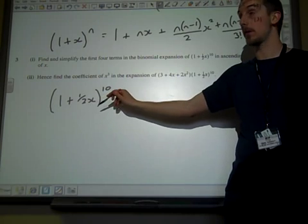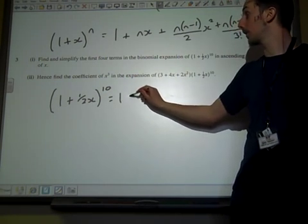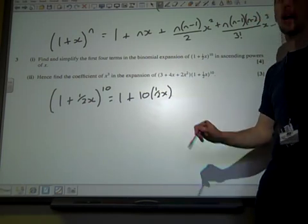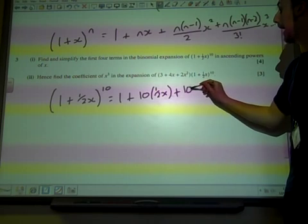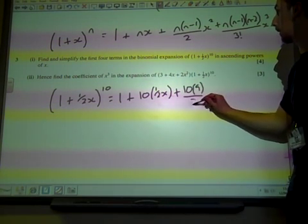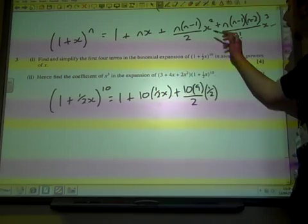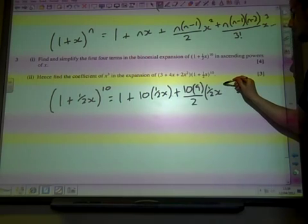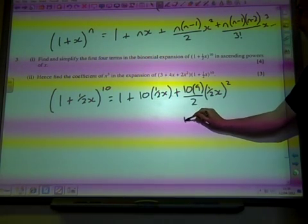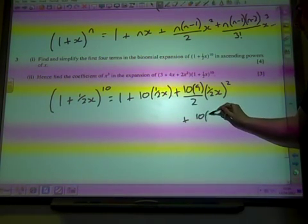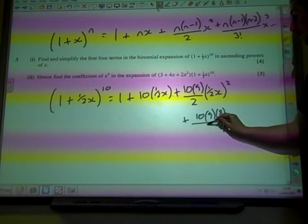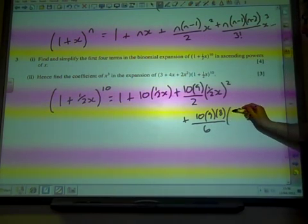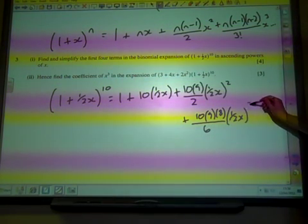Wherever we see x we're going to put half x. So it's one plus n times a half x, plus n times n minus one over two, times a half x when we square it, plus ten times nine times eight over three factorial, which is six, three times two times one, times a half x when we cube it.